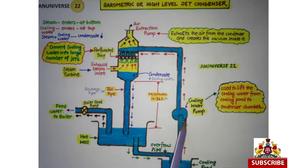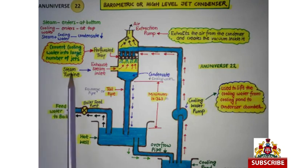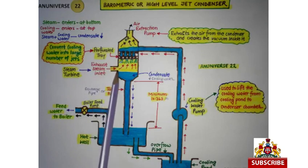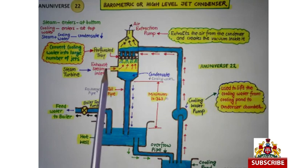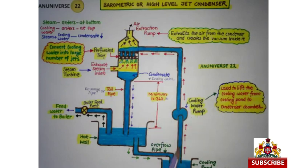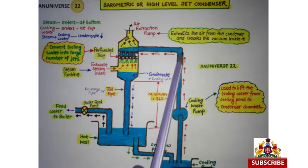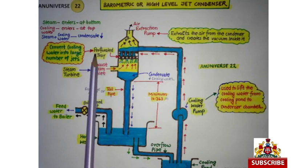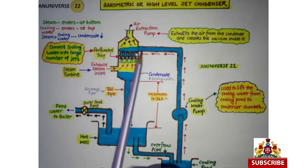Cooling Pond और Cooling Water Pump भी इसके components हैं। इसकी Working इस प्रकार है: सबसे पहले Steam Turbine से Exhaust Steam Condenser Chamber में enter करती है और यह Exhaust Steam Condenser Chamber के Bottom से enter करती है। यहाँ से Cooling Water Pump की मदद से Cooling Pond से Cooling Water को lift किया जाता है और उसे Condenser Chamber में भेजा जाता है।